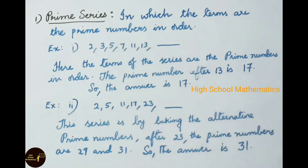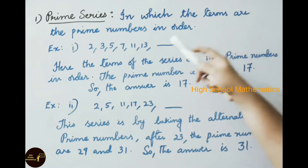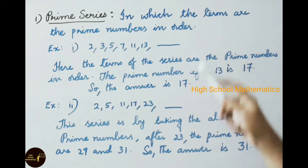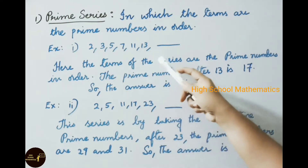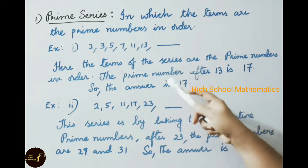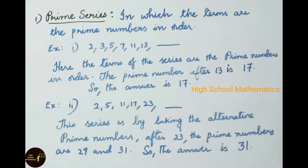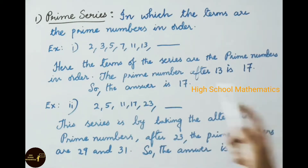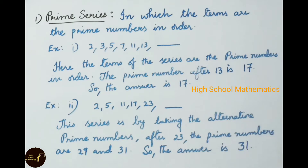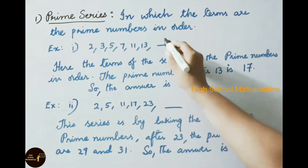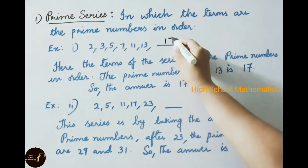In the first one, the prime series, the terms are prime numbers in order. For example: 2, 3, 5, 7, 11, 13 — what is the next term in this series? The terms of the series are prime numbers in order, so the prime number after 13 is 17. The answer is 17.